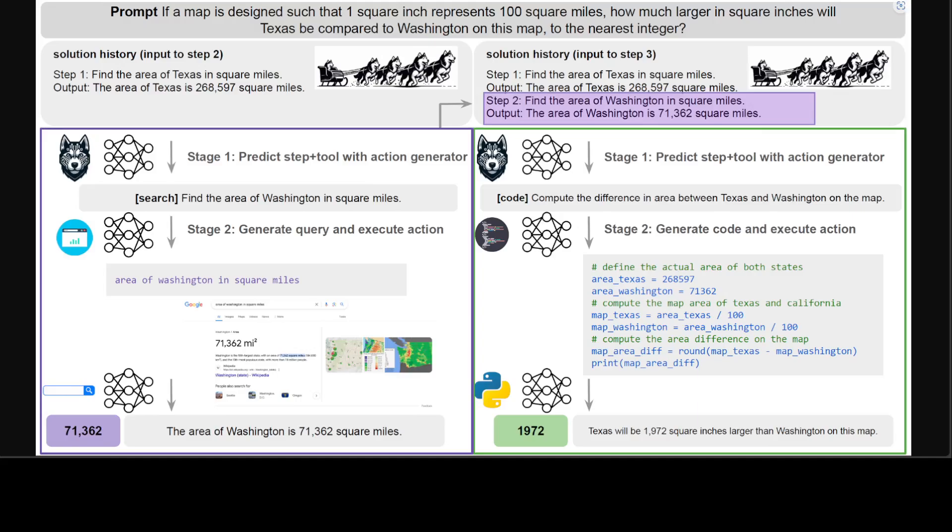As LLMs are limited in their computational or factual accuracies, language agents provide a compelling alternative by interacting with external tools to solve complex tasks step by step.